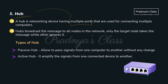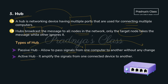The next network device is a hub. A hub has multiple ports so that we can connect multiple computers. Hub broadcasts the message to all the nodes in the network, but only the target node will receive the message and others will ignore it. There are two types of hub: passive and active. A passive hub allows signals to pass from one computer to another with no change in the signal, whereas an active hub amplifies the signals.